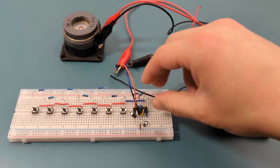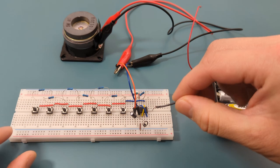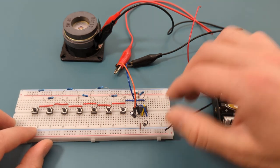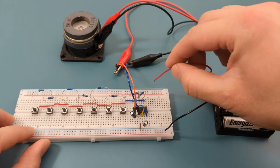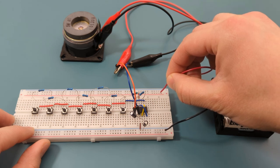It's time to connect the power supply. Attach the negative lead from the battery holder to the negative rail. Attach the positive lead from the battery holder to the positive rail.